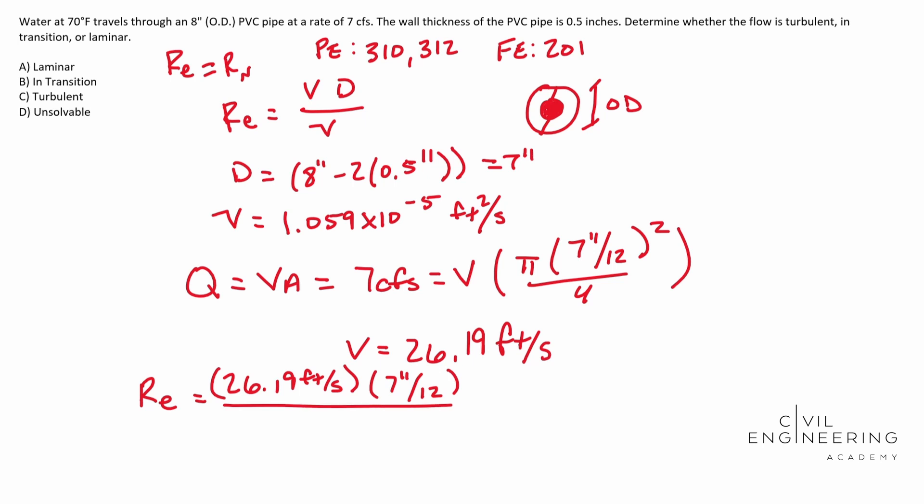So we need to divide it by our kinematic viscosity which is 1.059 times 10 to the negative 5 feet squared per second.